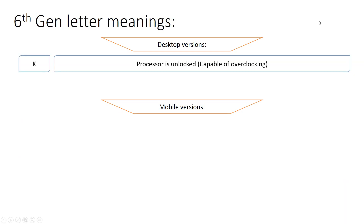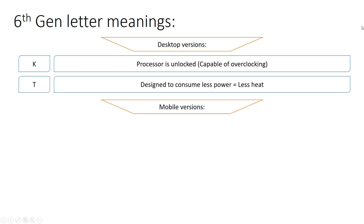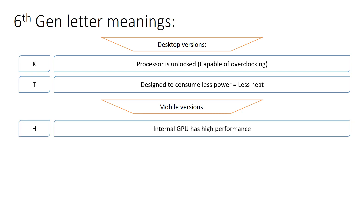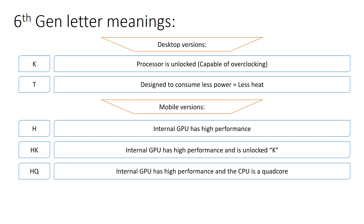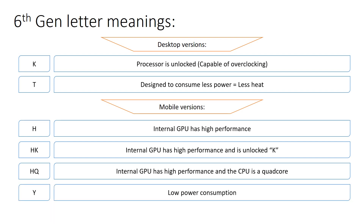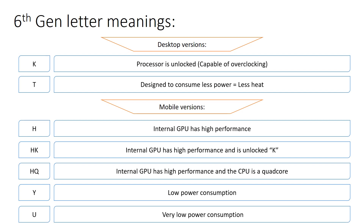For the 6th generation, the letters are exactly the same as the 7th generation. Desktop: K means unlocked and capable of overclocking, T means designed for less power and less heat. Mobile: H means the iGPU is high performance, HK means high performance and unlocked, HQ means high performance iGPU with a quad core CPU, Y is low power consumption, and U is very low power consumption.